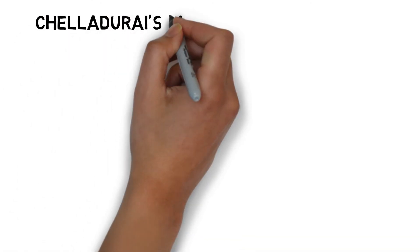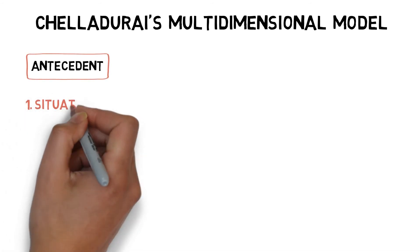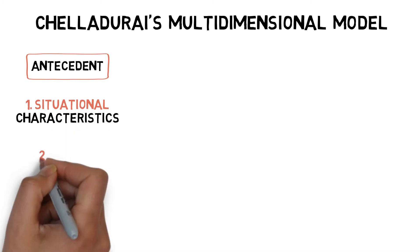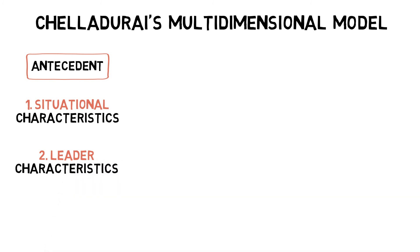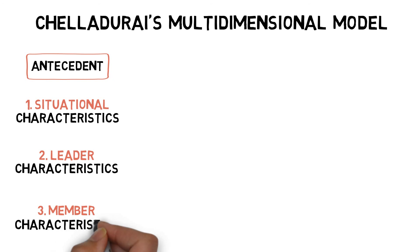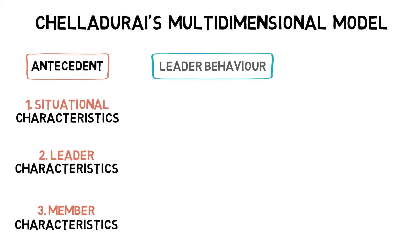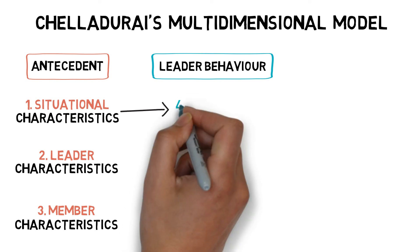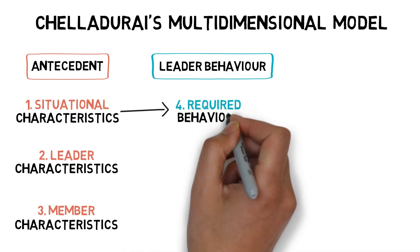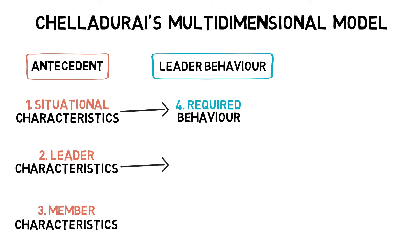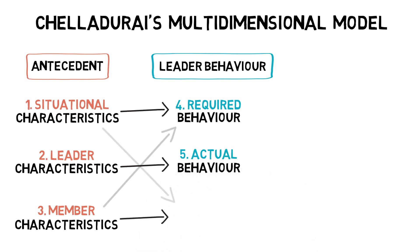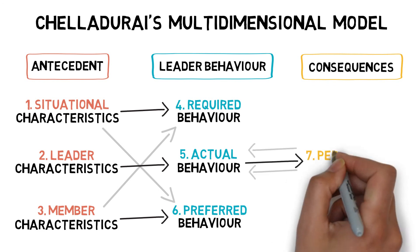Social learning theory suggests that the effectiveness of leadership depends on three factors: the situation, such as time, tradition and size of the group; leader characteristics, such as personality, leadership style and experience; and member characteristics, such as motivation, age and expectations. Once these factors have been assessed, the next stage can be considered in achieving performance satisfaction. Required behaviour is what is expected of a coach by team management. Actual behaviour is the way in which the coach normally goes about his job. And preferred behaviour is the way in which members prefer their coach to relate to them. The consequences of these factors will determine performance and satisfaction.